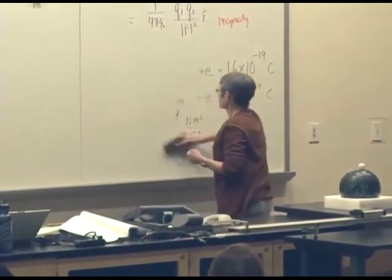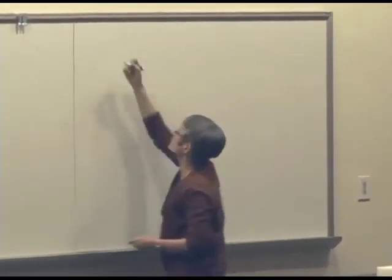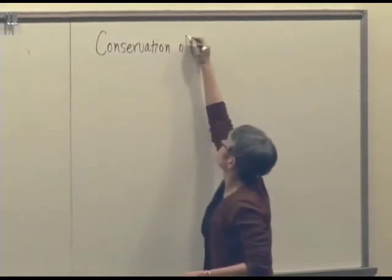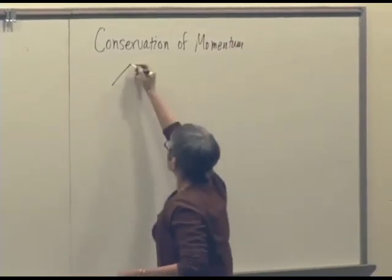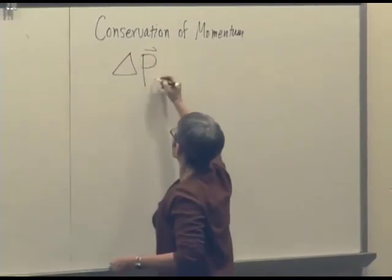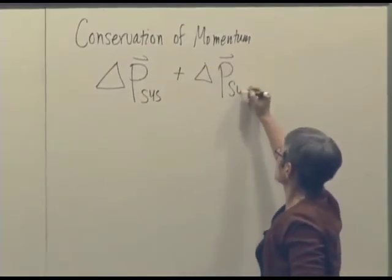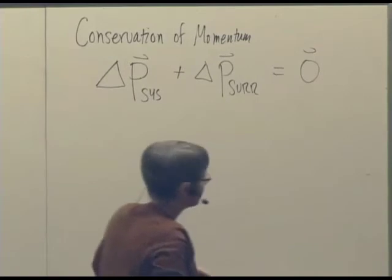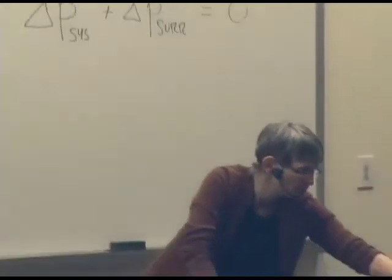So, we can actually write the momentum principle in the form that's sometimes called conservation of momentum. And we can write that as the change in the momentum of a system plus the change in the momentum of the surroundings has to equal zero. So, in this interaction, the momentum of our system changed from something to zero, but the momentum of the surroundings changed from zero to something. So, in fact, that seems to have worked.